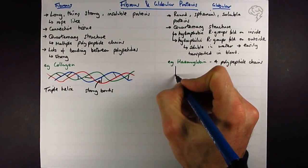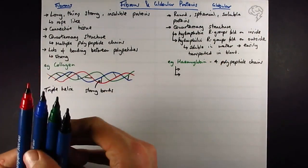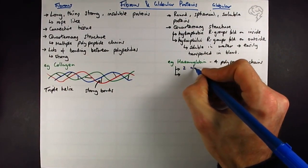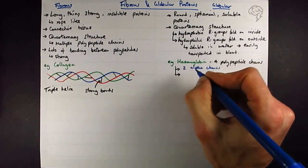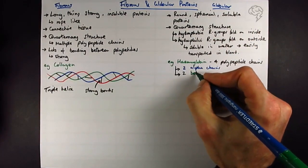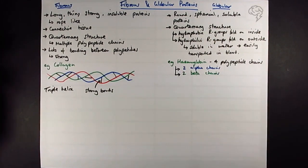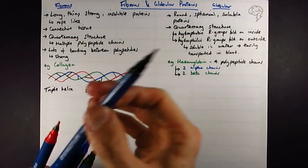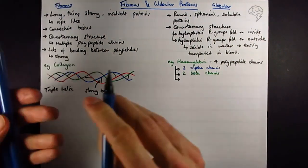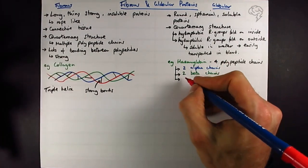It's made of two alpha chains and two beta chains, and it's also got one heme group per polypeptide, so that's a total of four in total.